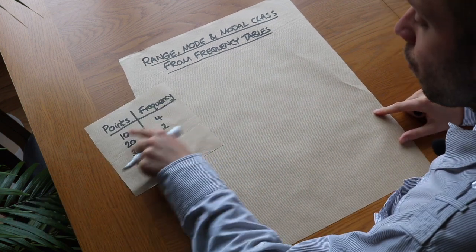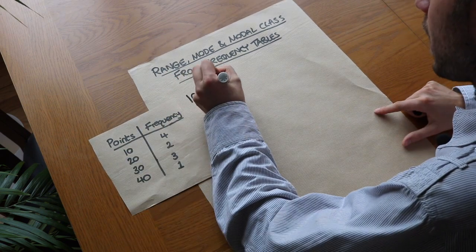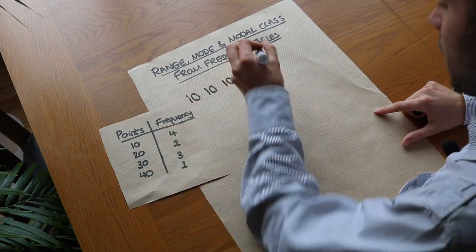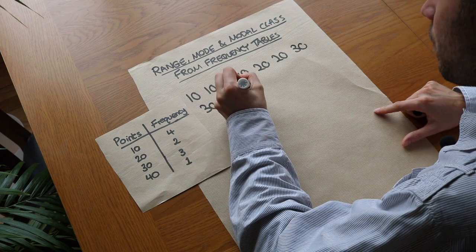What this means is that we've got four people who got 10 points, so we could list out these values explicitly. Four values of 10, we've got two values of 20, we've got three values of 30, and we've got one value of 40.